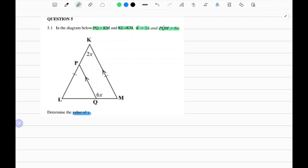I would always advise you guys to highlight the important properties that are given. The line KL equals the line KM, and line PQ is parallel to line KM.